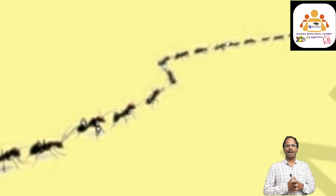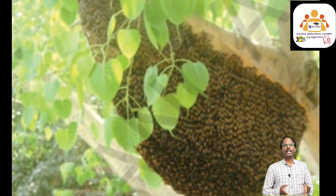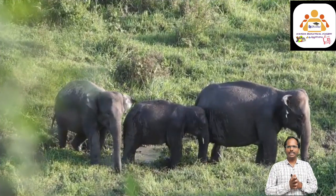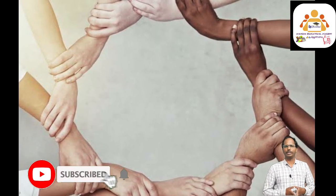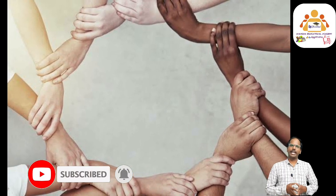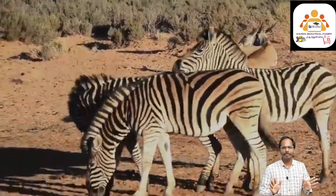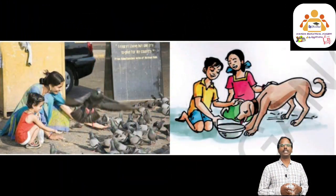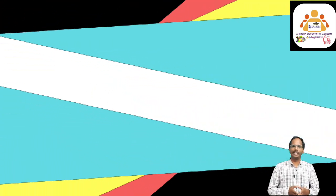Do you know? An ant can lift a weight 50 times more than its own weight. All insects including ants have 6 legs. Ants have 2 antennas on the head — these are useful in finding sources of food and passing information to one another. Like ants, honey bees also live in a colony and there is a division of labor too. You have seen that wild animals like elephants, tigers, monkeys and birds live in groups. Similarly, human beings also need to live together by sharing their work and discussing with each other. In times of trouble, this increases bonding, affection and relationships.